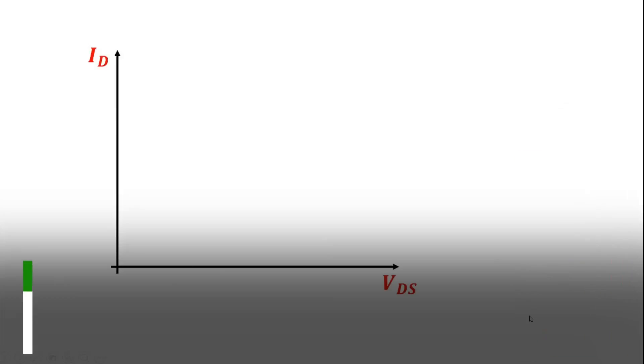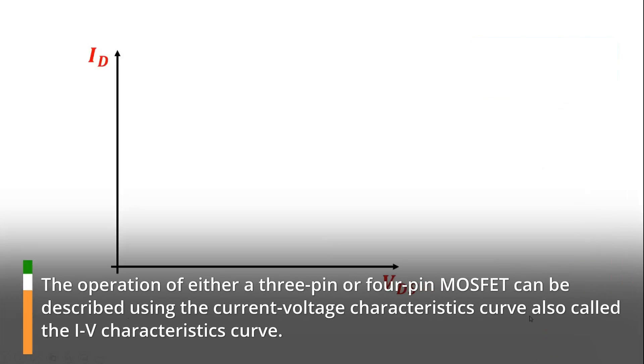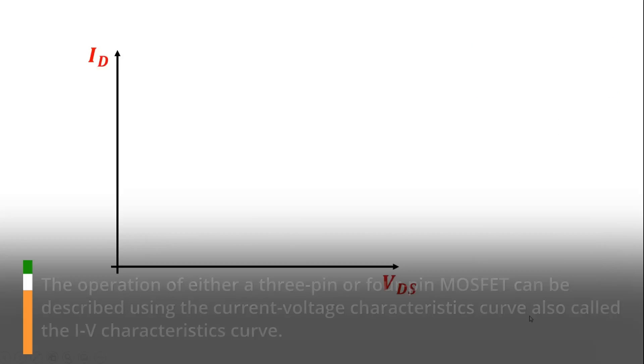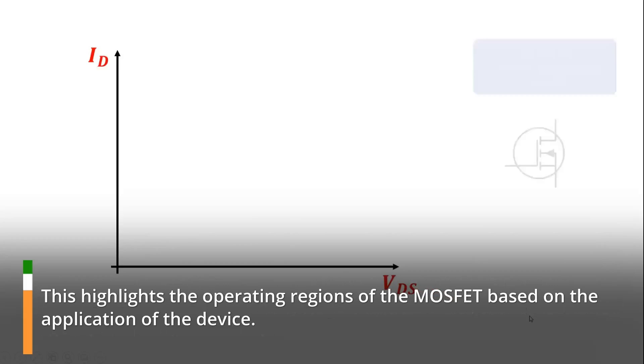The operation of either a three-pin or four-pin MOSFET can be described using the current voltage characteristics curve, also called the IV characteristics curve. This highlights the operating regions of the MOSFET based on the application of the device.